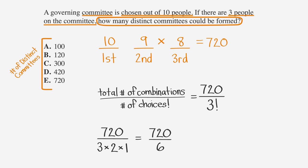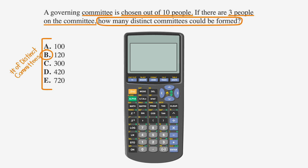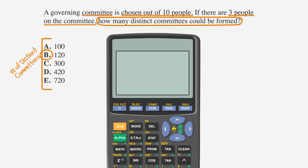So the number of committees that we can make is 120, which is answer choice B. Of course, we could also just use our TI calculator's built-in combination function. To do so, first type in the number of people we're choosing from, in this case, 10.